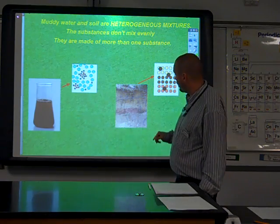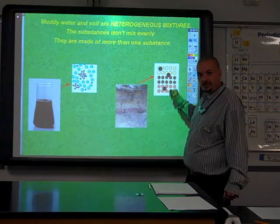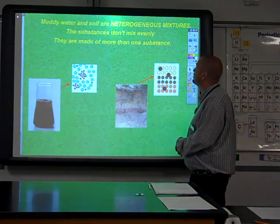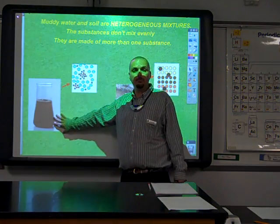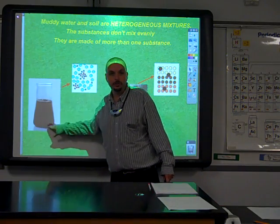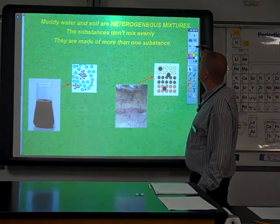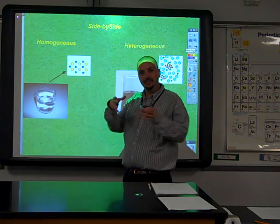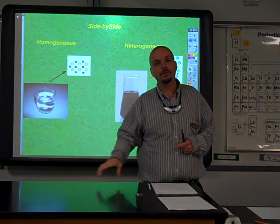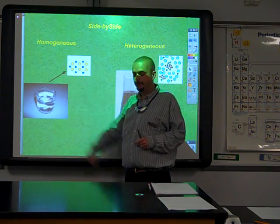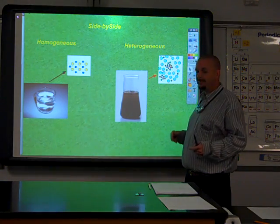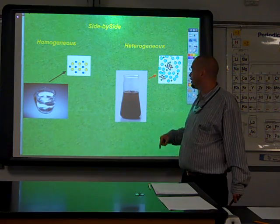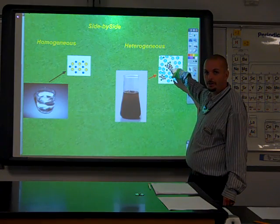In heterogeneous mixtures, you can often see the separate parts — different layers, roots, different things. Even with muddy water, if you look closely you can see bits of dirt floating around. They will settle and separate. If you let muddy water sit on the counter overnight, by morning you'd find most of the dirt has gone to the bottom. Side by side: in the homogeneous mixture like salt water, the salt and water are evenly spread out — same concentration everywhere, it looks the same no matter where you look. In the heterogeneous mixture, like muddy water, it looks different — you can see clumps of dirt floating, and there are different concentrations of water throughout.